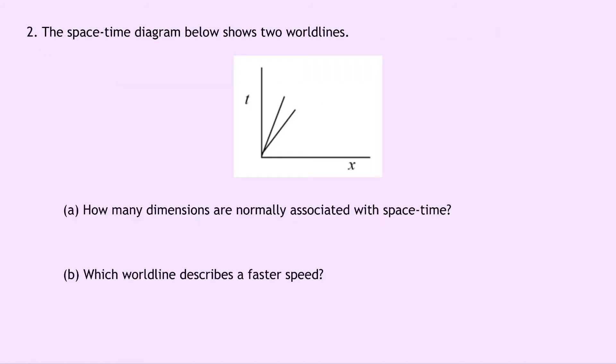Question two says that the space-time diagram below shows two worldlines. So we've got our time axis and our space axis which is the x dimension. And part A says how many dimensions are normally associated with space-time. Well remember there's usually four dimensions where three are space dimensions x, y and z and one is time t.